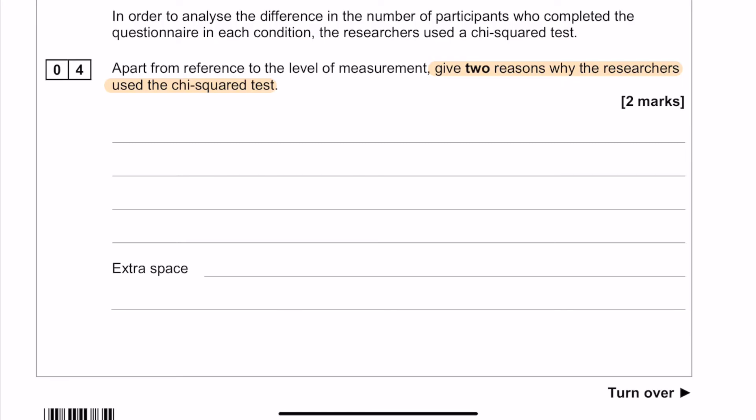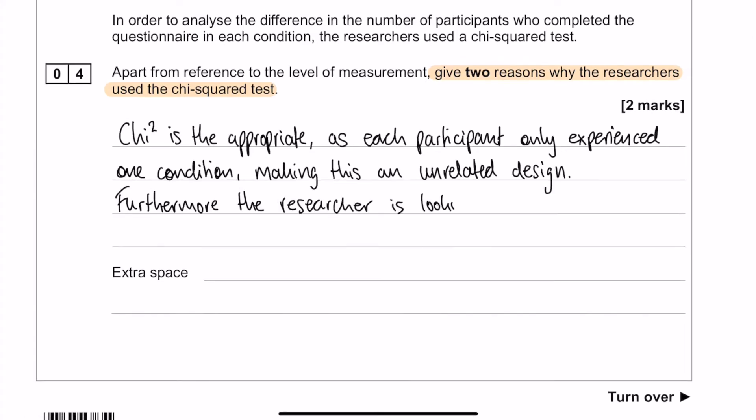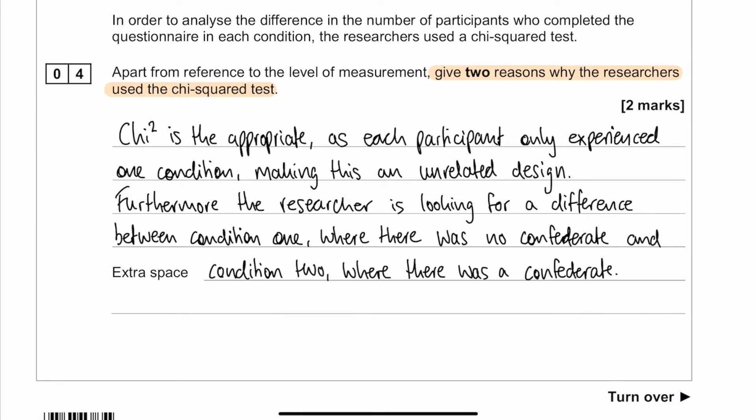So we do have to use the fact that they're using an unrelated design, because everyone only experiences one condition, and the fact that it's a test of difference, because the research is looking for a difference between the two conditions. Really important for this one, and again it's just a nice habit to get into when you have a stem, is use the information in the stem to justify why it is a test of difference and why it's an unrelated design. You don't have to give a massive amount of detail, but just a little bit so that the examiners know that you are actually talking about this stem.